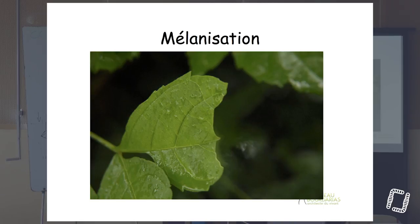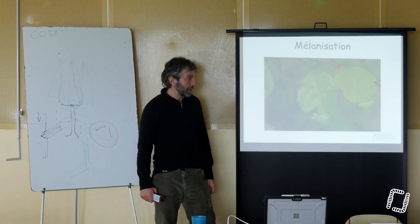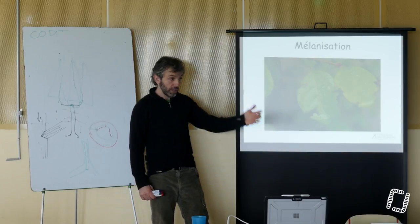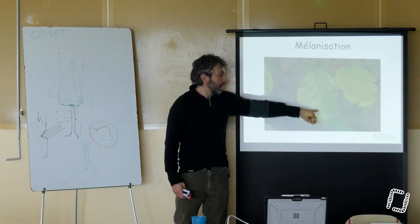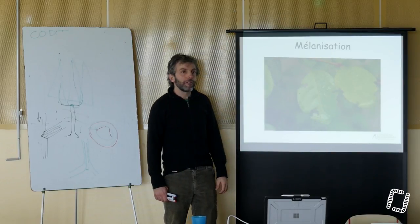Ce phénomène de compartimentation dans la feuille, si on regarde et qu'on analyse ce liseré que l'on a rouge-noir, on s'aperçoit que c'est de la mélanine. C'est aussi une oxydation de tannin successive qui crée de la mélanine.